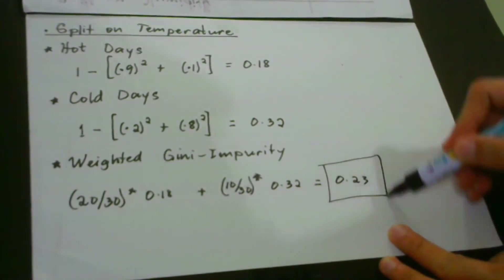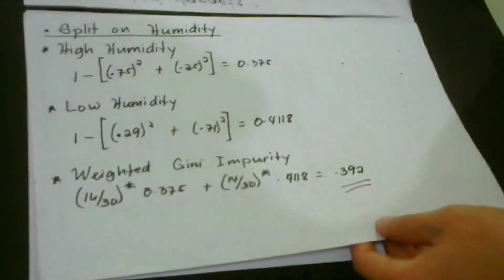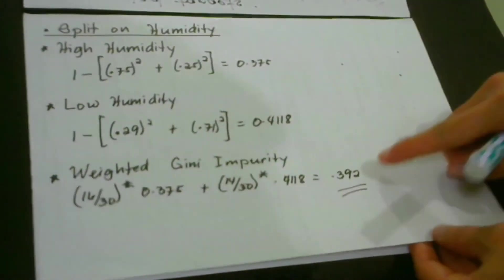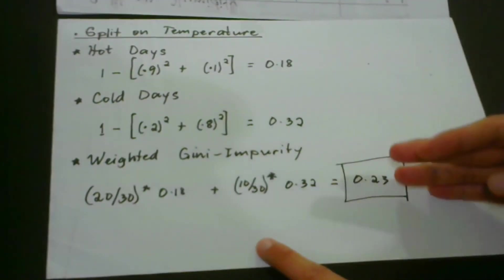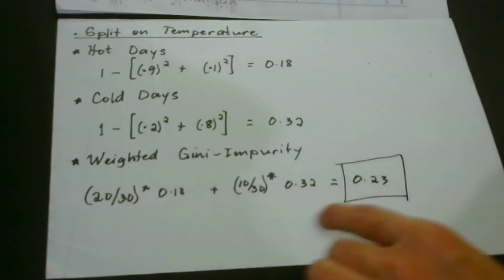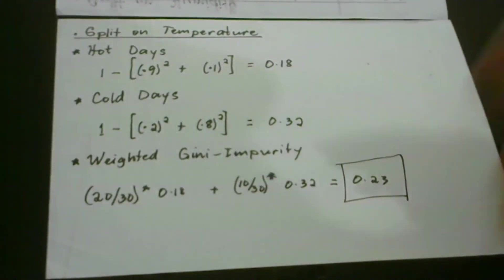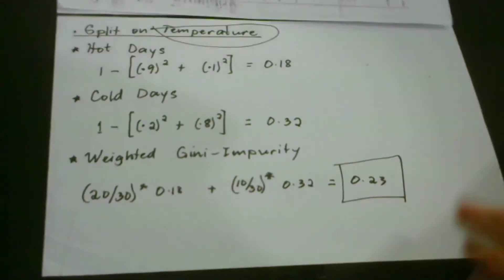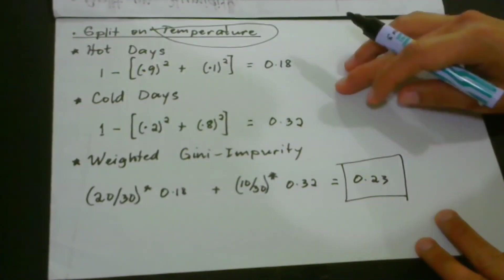To decide which variable — temperature or humidity — to use for the first split, we compare their weighted Gini impurity values: 0.392 for humidity and 0.23 for temperature. Since a lower Gini impurity means a more homogeneous node, and 0.23 is lower, the split on temperature is more homogeneous. Therefore, we use temperature as our first variable to split.